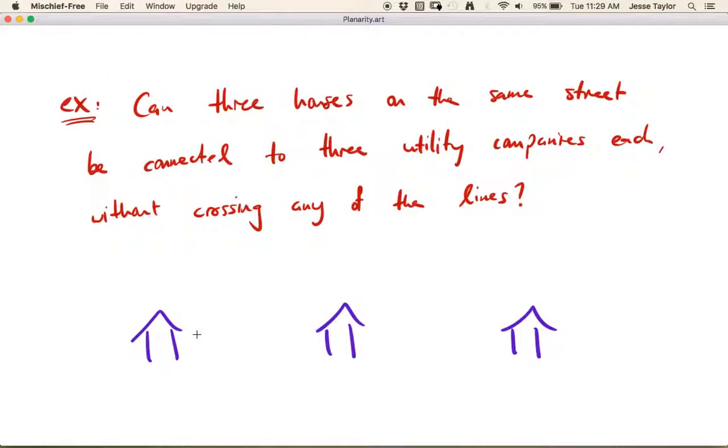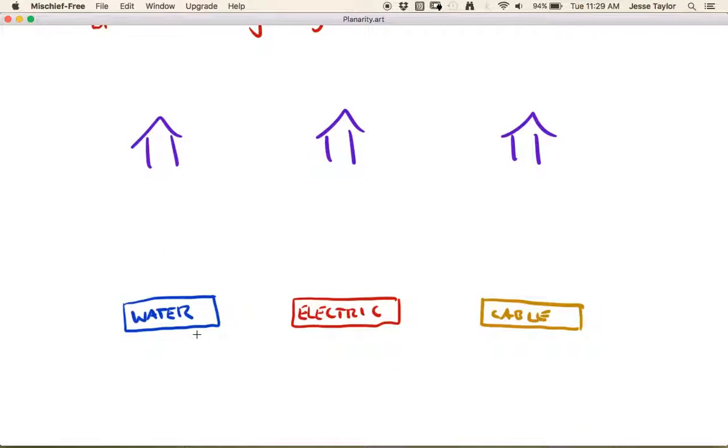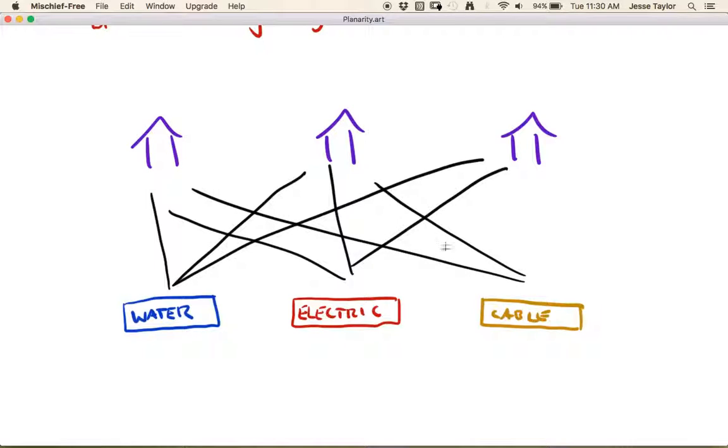But the last thing I want to talk about in this video is sort of an old word problem. It's used to appear in puzzle books around turn of the century, around 1900 that is. Can three houses on the same street be connected to three utility companies each without crossing any of the lines? In other words, I've got these three houses and I want to run a water line to every house. I want to run an electric line to every house. And I want to run a cable line to every house. So essentially what I'm trying to do is connect a water line to all three of these houses, connect an electric line to all three of these houses, and connect a cable line to all three of these houses.